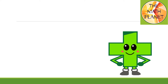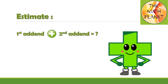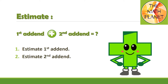Hi, I am Plussie. Do you remember me? Today we will learn how to estimate sums. In order to estimate the sum for an addition equation, we will do the following steps: first, we will estimate the first addend; then we will estimate the second addend; and finally, we will add the two estimated numbers to get the estimate sum.